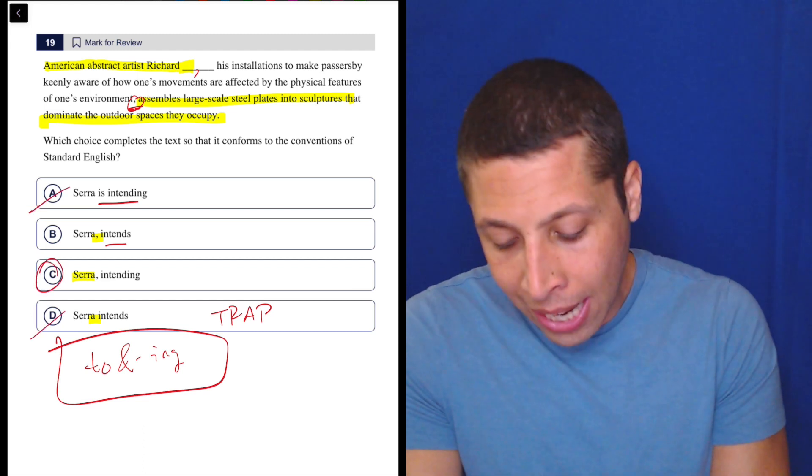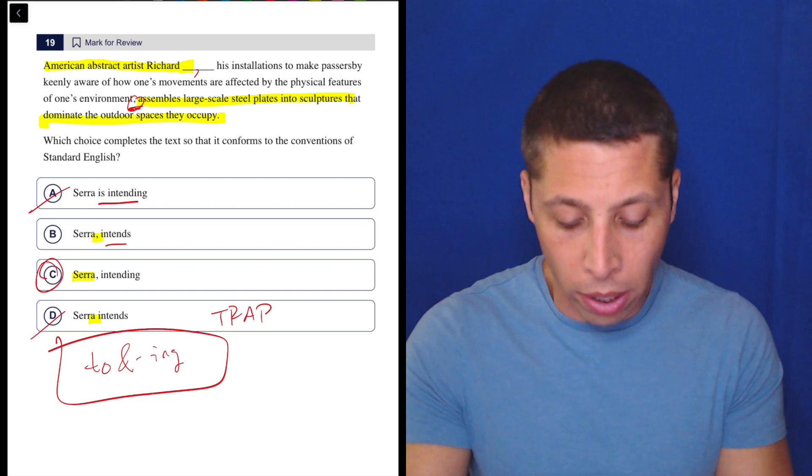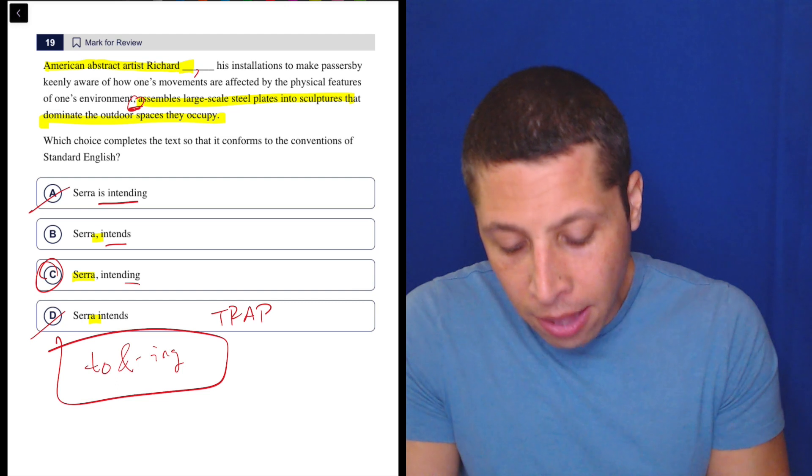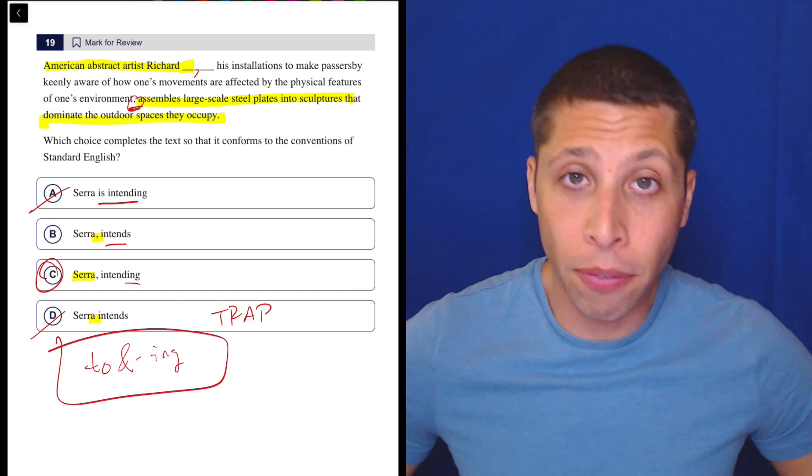And then it has to be C because in order for this to work, we need the verb to be in this ING form. We use the ING form in extra clauses very often.